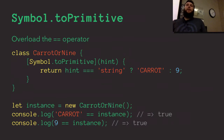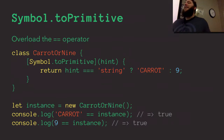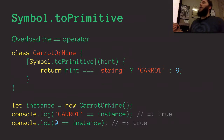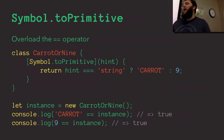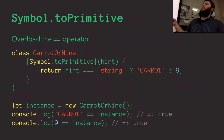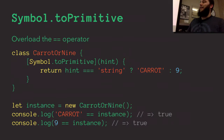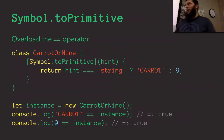Another well-known symbol is Symbol.toPrimitive. I'm creating a class called CaretOrNine and implementing the Symbol.toPrimitive method, which receives a hint — what you're trying to coerce the value into. When coercing to a string, I return the string 'caret'. When coercing to a number or anything else, I return the value 9. So I'm changing the way the double-equals operator works. If I do 'caret' == instance, that returns true. And 9 == instance also returns true — it's equal to both, but not strictly equal to both.